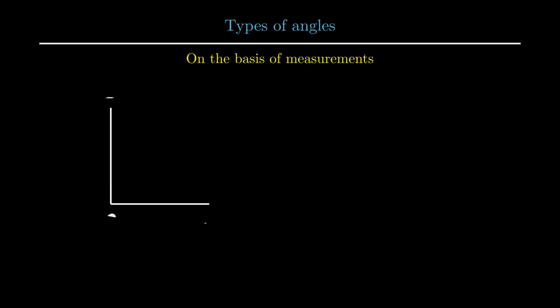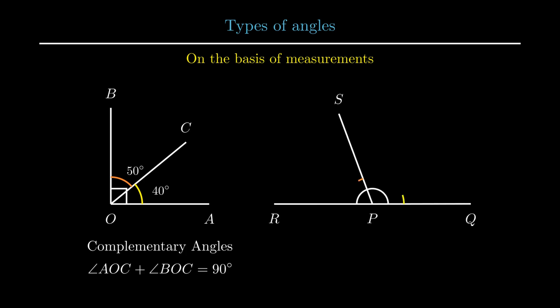Further, if the sum of two angles measures 90 degrees, then the pair of angles is called complementary angles. From the figure, angle AOC and BOC equals 90 degrees. And if the sum of two angles measures 180 degrees, then the pair of angles is called supplementary angles. From the figure, angle QPS and angle RPS equals 180 degrees.